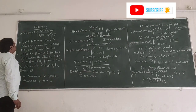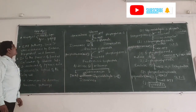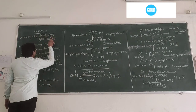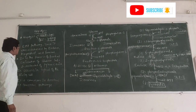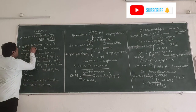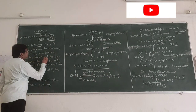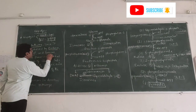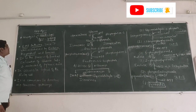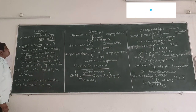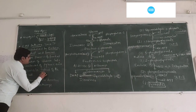Glycolysis is a Greek word. 'Glycos' means sugar, and 'lysis' means splitting of hexose sugar — that is called glycolysis. Glycolysis is also known as the EMP pathway, since it was discovered by three scientists: Embden, Meyerhoff, and Parnas. The glycolysis reactions take place within the cytoplasm of the cell.